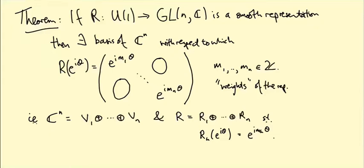If you think about what this means, that basis with respect to which the matrix is diagonal is a basis of eigenvectors for the matrix R(e^{iθ}). For example, (1,0,0,...,0) will be an eigenvector with eigenvalue e^{im₁θ}.